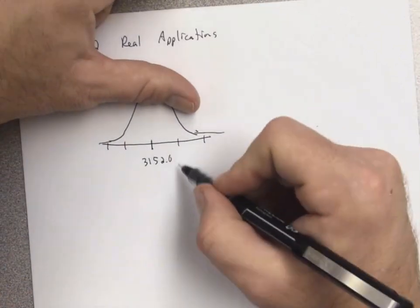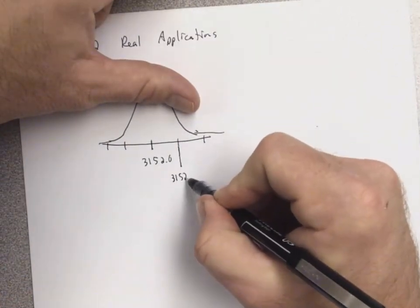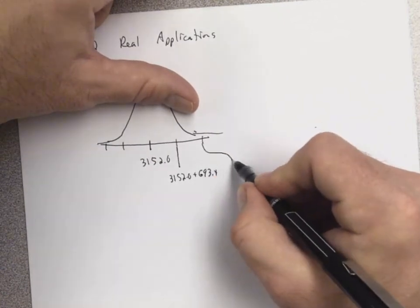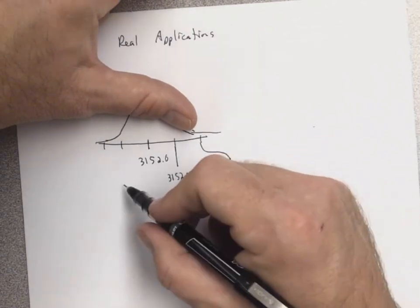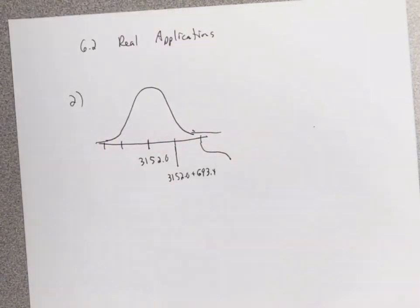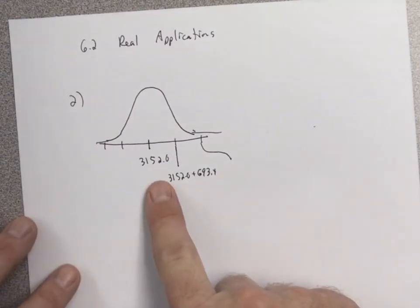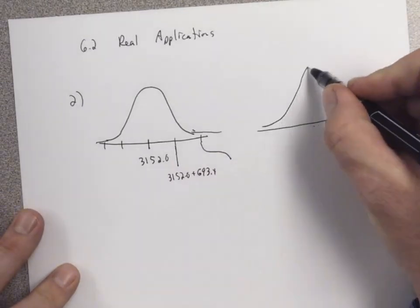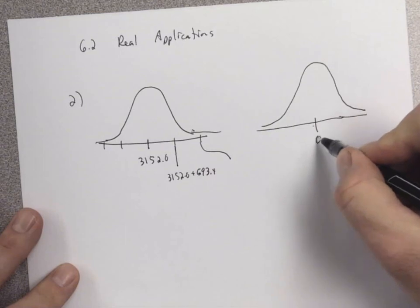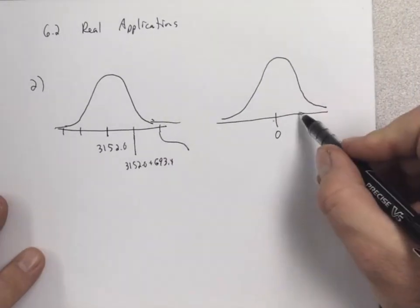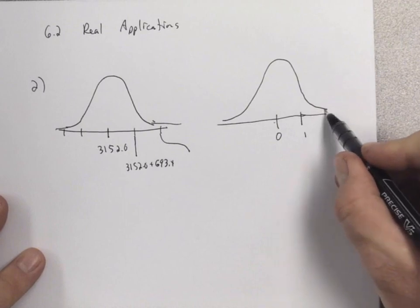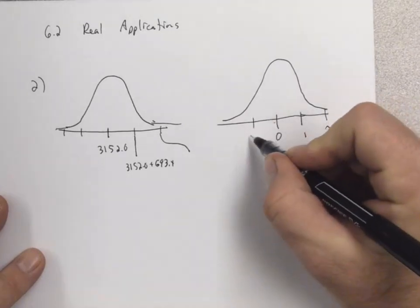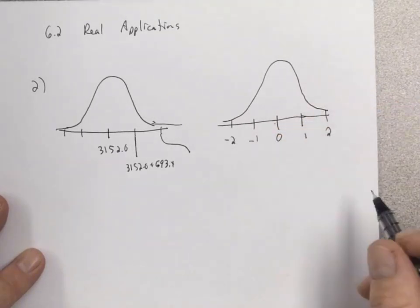To find the values on the curve, this center value is 3152.0. Adding one standard deviation gives 3152.0 plus 693.4, adding two gives plus two standard deviations, and subtracting one or two standard deviations gives the left side values. It's the same idea as the standard normal curve where the mean is zero, and you add or subtract standard deviations from there.